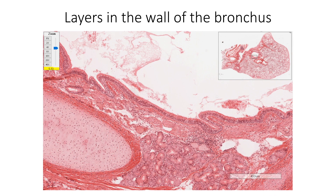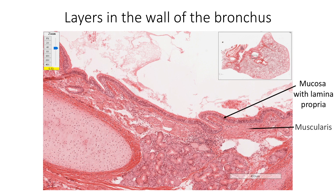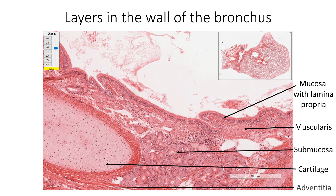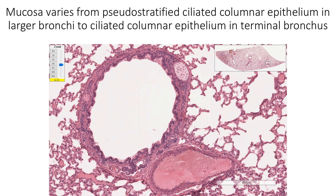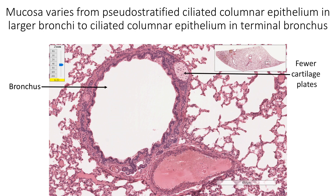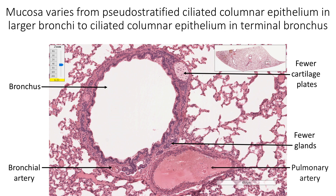From inside outward, the wall of the bronchus shows mucosa with lining epithelium and lamina propria, muscularis with smooth muscle, submucosa with seromucous glands, hyaline cartilage plates, and an outer layer of adventitia. Mucosa varies from pseudostratified ciliated columnar epithelium in larger bronchi to ciliated columnar epithelium in terminal bronchus. The smallest bronchi show folded mucosa resulting in vertical ridges, fewer cartilaginous plates, and fewer seromucous glands in the submucosa. We are also able to see the bronchial artery in the wall of the bronchus and accompanying pulmonary artery.